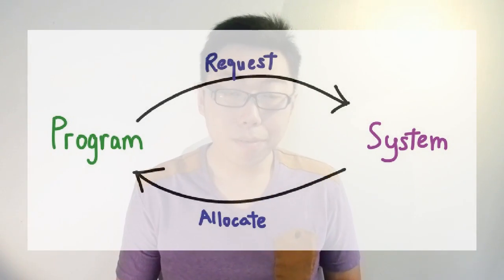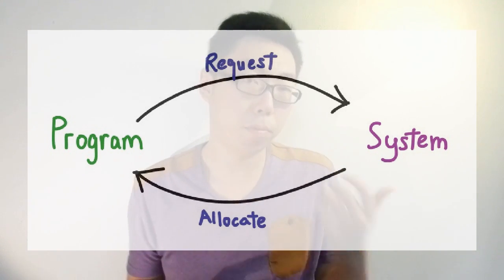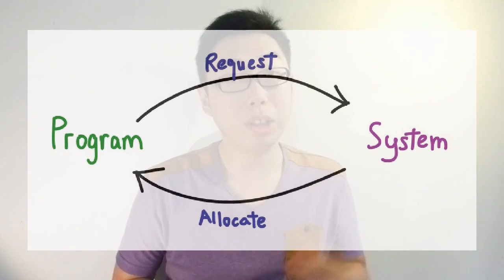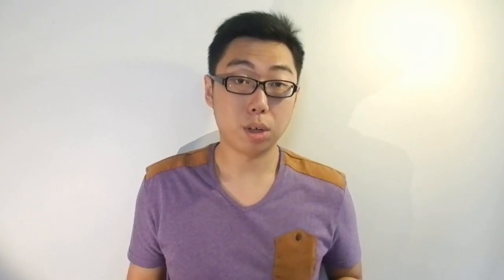This means all programs take up a certain amount of memory, and that's all well and good. On a more technical level, a program will request the system for some memory, the system will then allocate this memory to the program, and the program can use it. This of course leads to one problem: memory is a finite resource. Eventually, if you have enough running programs or your programs all take up a lot of memory, ultimately you're going to run out.